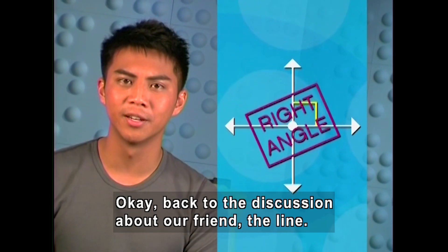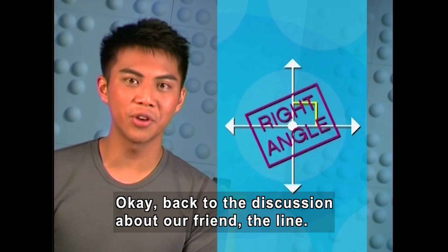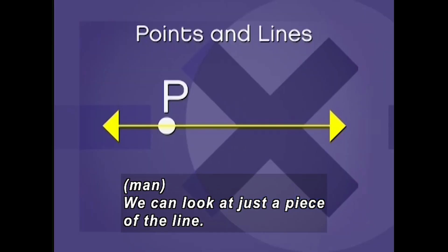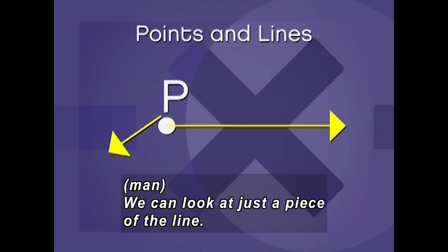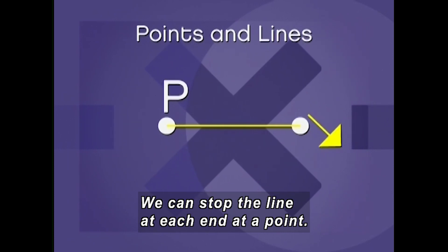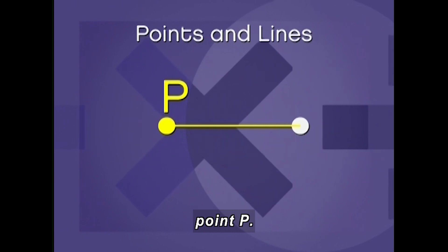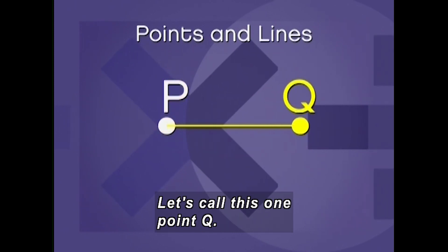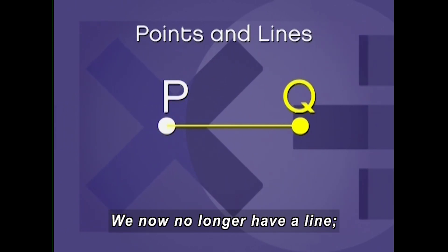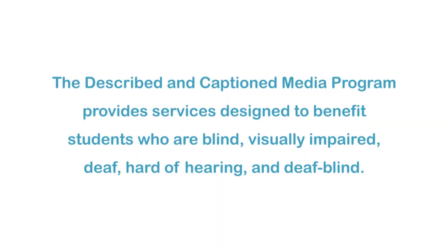Okay, back to the discussion about our friend the line. We can look at just a piece of the line if we want to. We can stop the line on each end at a particular point. That's our original point, point P. Let's call this one point Q. We now no longer have a line — we have a line segment.